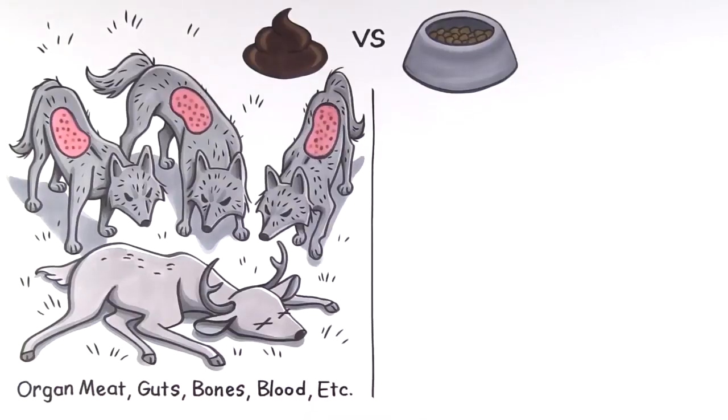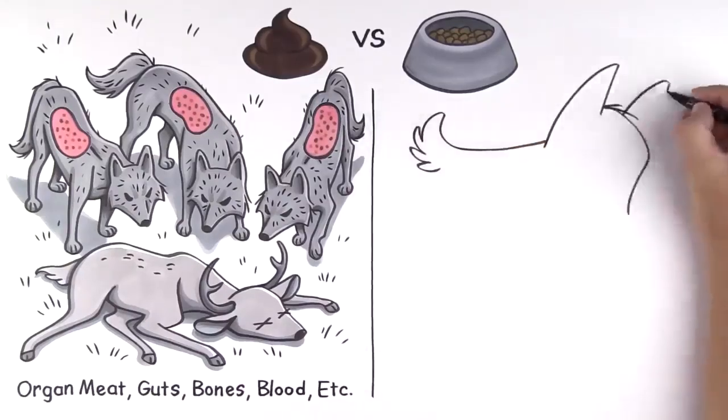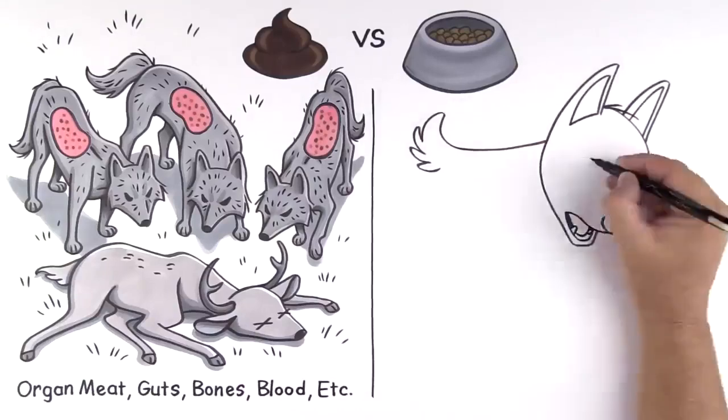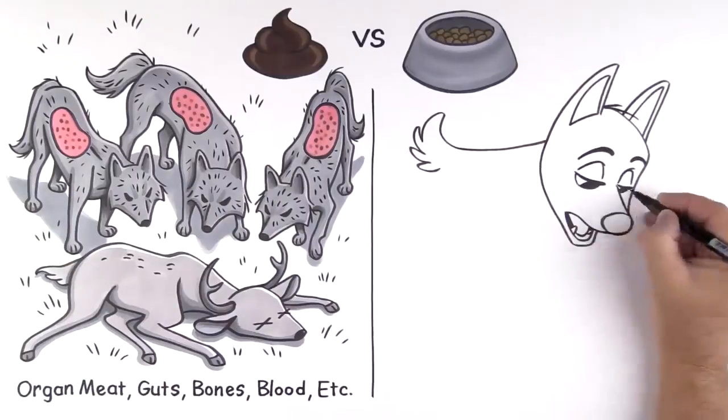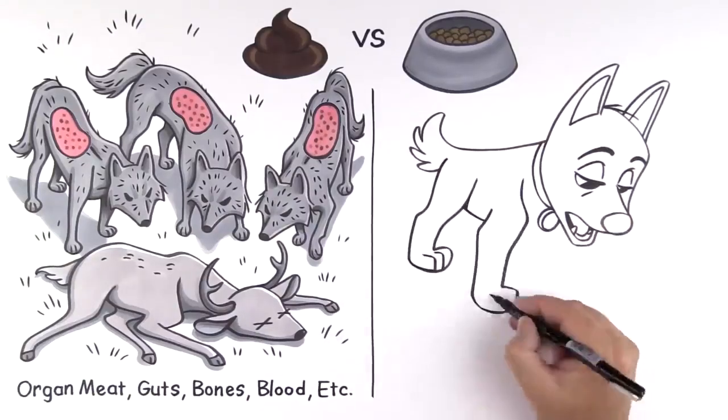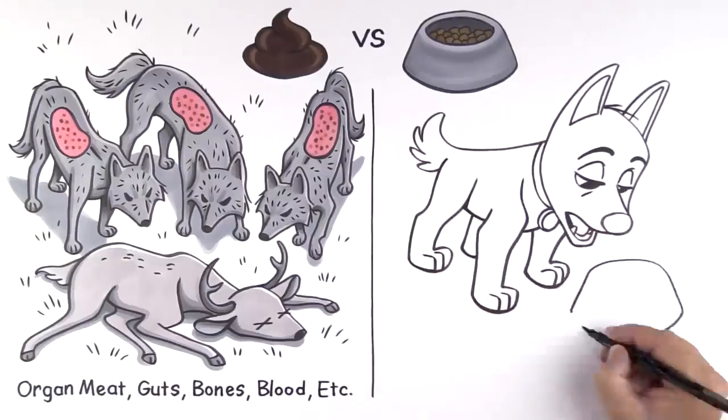This raw meal naturally contains the appropriate amount of digestive enzymes and nutrients the dog needs. Not so with the kibble-heavy, overheated, high-processed doggy diets. Dogs can create enzymes, but not enough to complete the digestive process effectively.